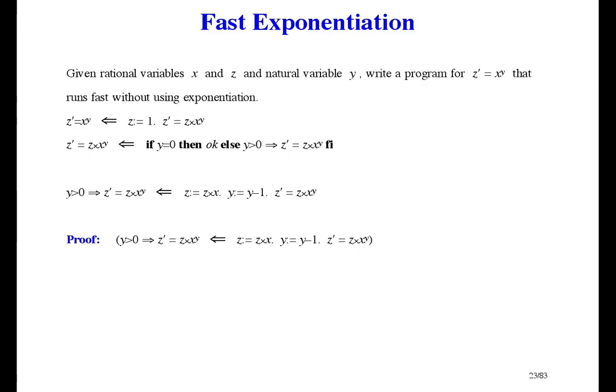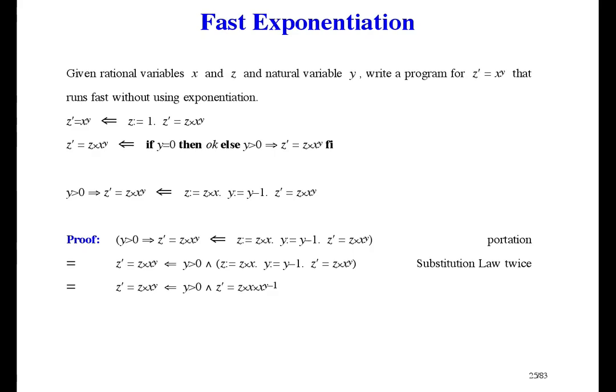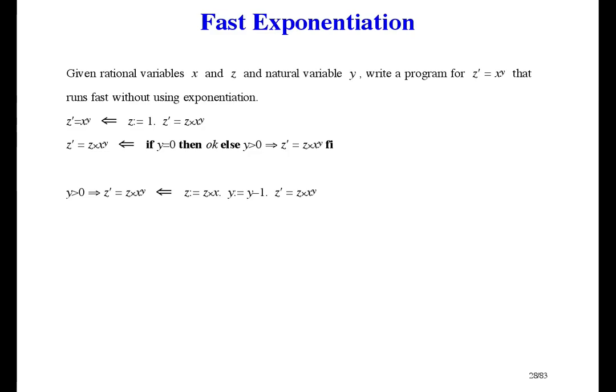Here's the proof. First let's get all the antecedents on the same side. Now we use the substitution law twice. In the antecedent we have Z prime equals Z times X times X to the power Y minus 1, so we can simplify that. Now we specialize and we're done — in the sense that there are no unsolved problems and we can execute it. But we're not done in the sense that it isn't yet the world's fastest exponentiation program. The time is basically the time to count Y down to 0, so if we can do that faster, we win.